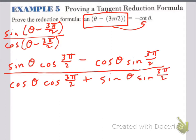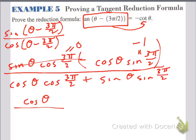Simplifying: cosine of 3 pi over 2 is 0, so those terms cancel. Sine of 3 pi over 2 is negative 1. On top: negative cosine theta times negative 1 gives positive cosine theta. On the bottom: sine theta times negative 1 gives negative sine theta. So we have cosine theta over negative sine theta. Cosine over sine is cotangent, and since it's negative, it's negative cotangent theta.